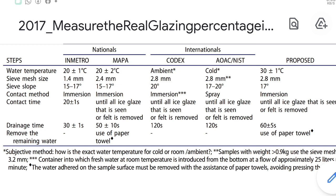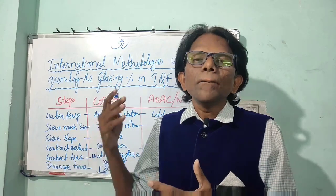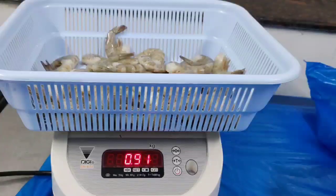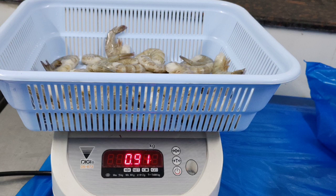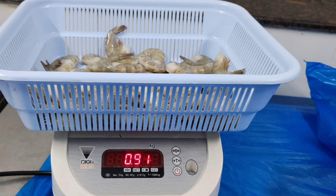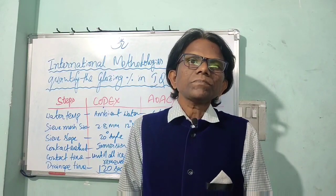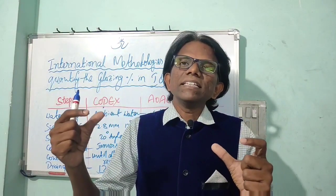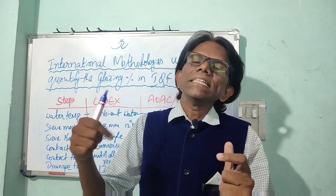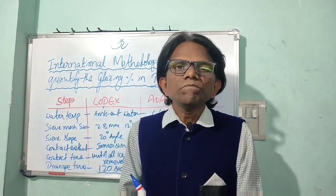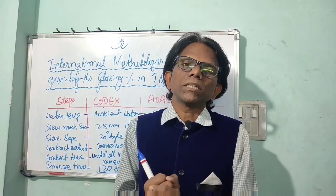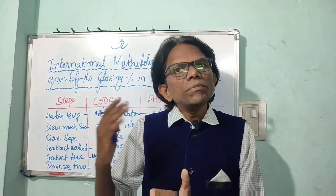After 120 seconds of drainage, transfer the material into the receiving pan. Since you have already recorded the tared weight of the receiving pan, take the final weight. The glazing percentage formula is: (Frozen Weight − Deglazed Weight) ÷ Frozen Weight × 100. This gives the glazing percentage of the shrimps, which is used to determine the filling weight for online packaging.